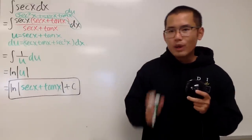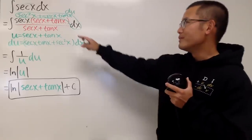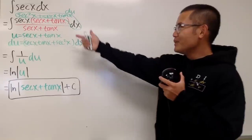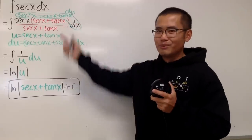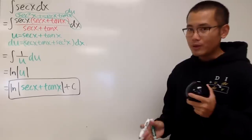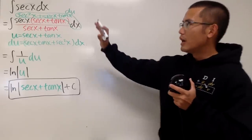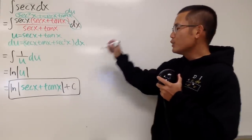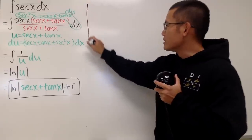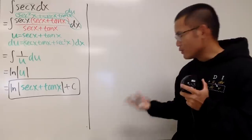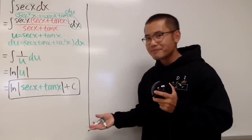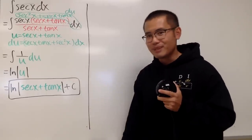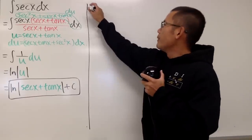Have you ever wondered: what if we didn't multiply the top and bottom by that factor first? How did we even know to multiply by that in the first place? Today I'll show you how to integrate secant x without doing that first, and we'll still end up with the standard result. The procedure is longer, but it may answer why we multiply by that factor.